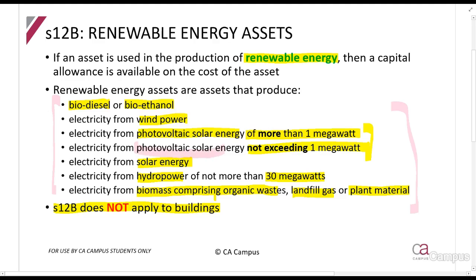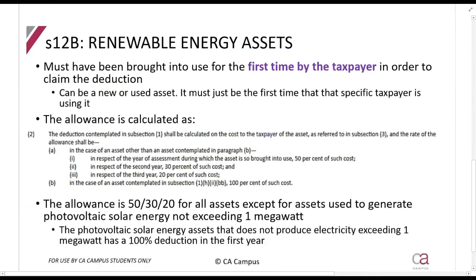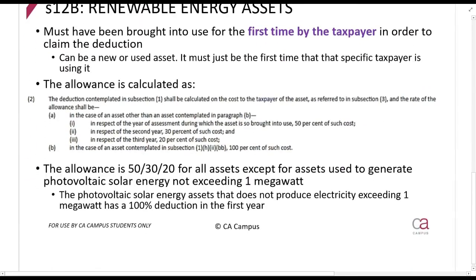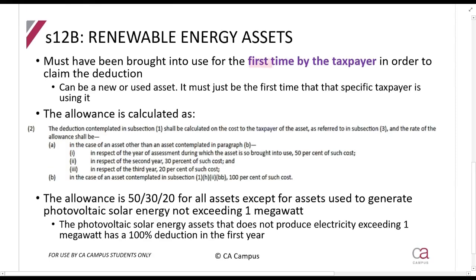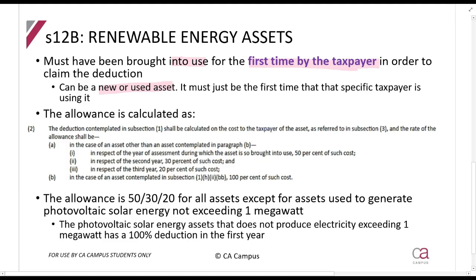How does the deduction work? First of all, this must be the first time you are bringing an asset into use to claim this deduction. It can be a new or used asset, but it must be the first time you are using it. You cannot buy an asset, sell it to someone, buy it back, and then claim it again — it must be the first time you are using it.